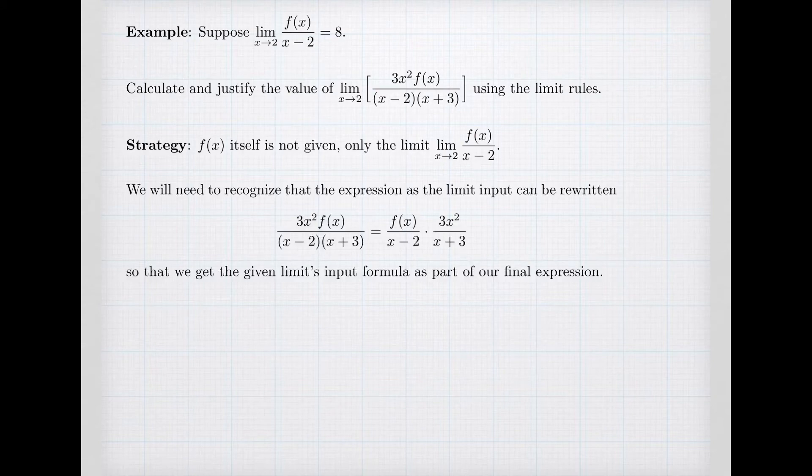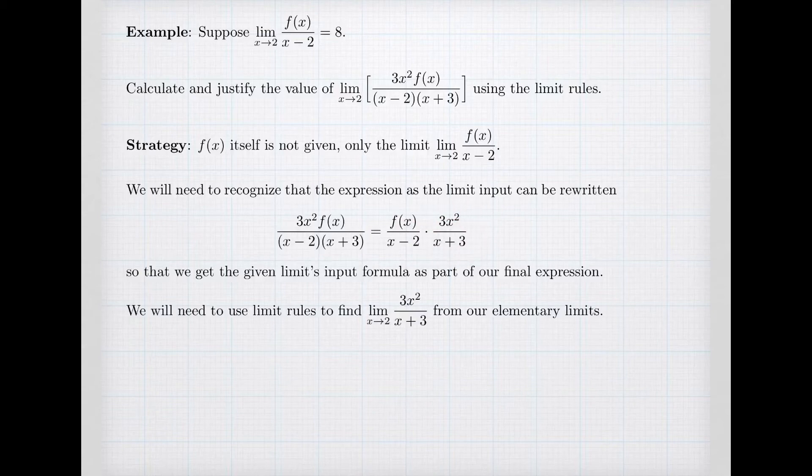Now our strategy is we're going to build up to this final expression and inside is this function f(x). We don't have a formula for it. We only know a limit of a quotient f(x) over (x-2). So we need to take this basic formula and split it up. And so we recognize that that expression can be written as a quotient f(x) over (x-2) times a quotient 3x² over (x+3). The given limit input f(x) over (x-2) is now part of my formula. And we see it's a product with another term. So we're going to need to use limit rules to find the limit of the other term, 3x² over (x+3). And then we'll be able to use the product rule to put it together.